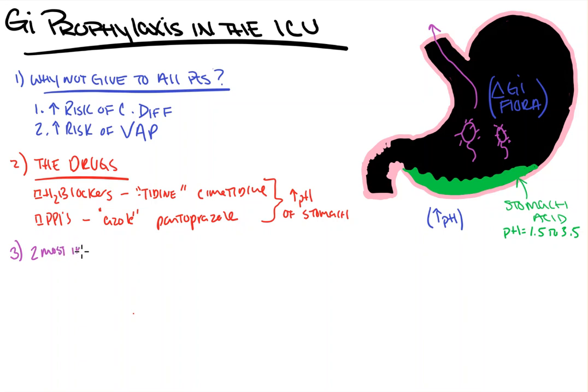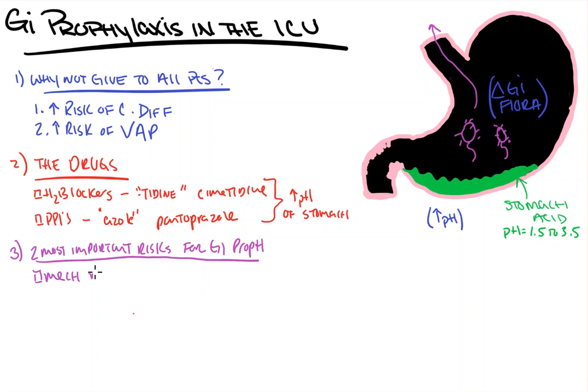The two most important risk factors requiring GI prophylaxis — and this is where a lot of debate comes in — are mechanical ventilation greater than 48 hours, and a coagulopathy. Coagulopathy is specifically defined as platelets less than 50,000, an elevated INR greater than 1.5, or a PTT greater than two times the normal control value. These are the two main reasons for GI prophylaxis.